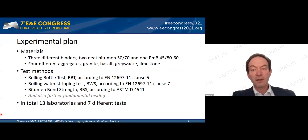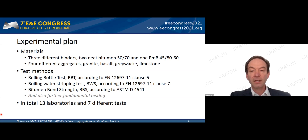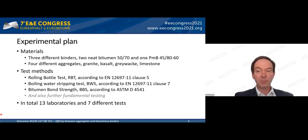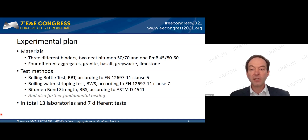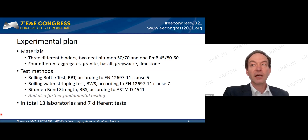For the experimental plan: three different bitumens were used — two 50/70 bitumens from different sources and one polymer-modified bitumen graded as 45/80-60. Four different types of aggregates from various mineralogical natures were selected to have different colors and water sensitivities. A wide range of tests were included depending on the experience and capability of each lab.